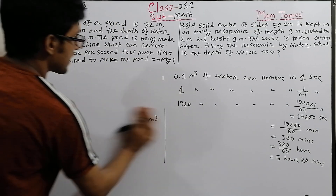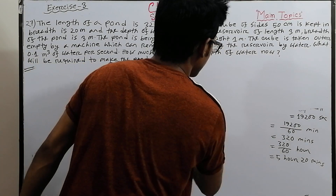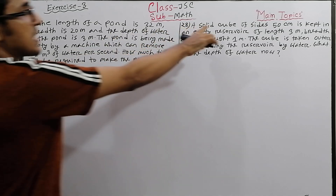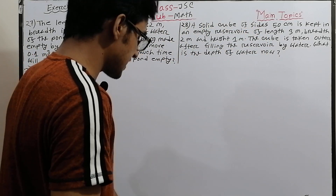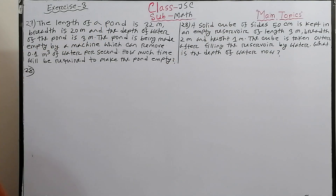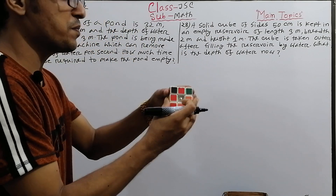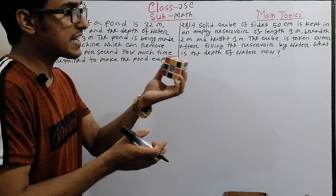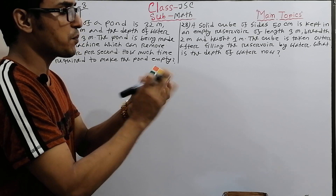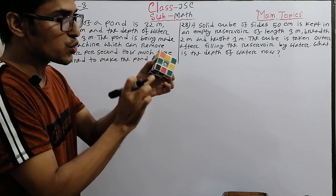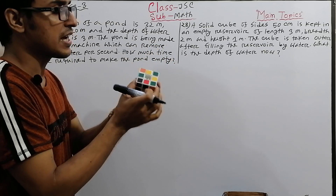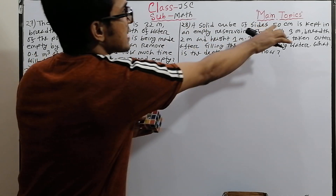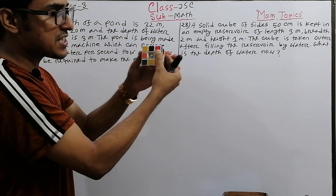Now for problem number 28: a solid cube of side 50 centimeters is kept in an empty reservoir. The side of the solid cube equals 50 centimeters on all sides.